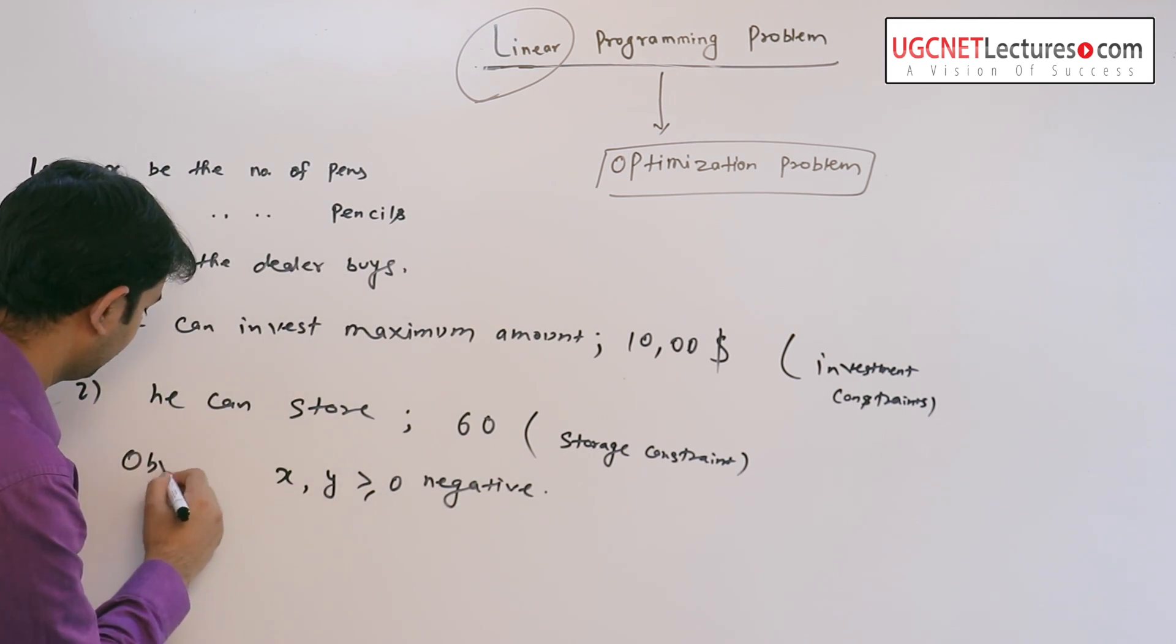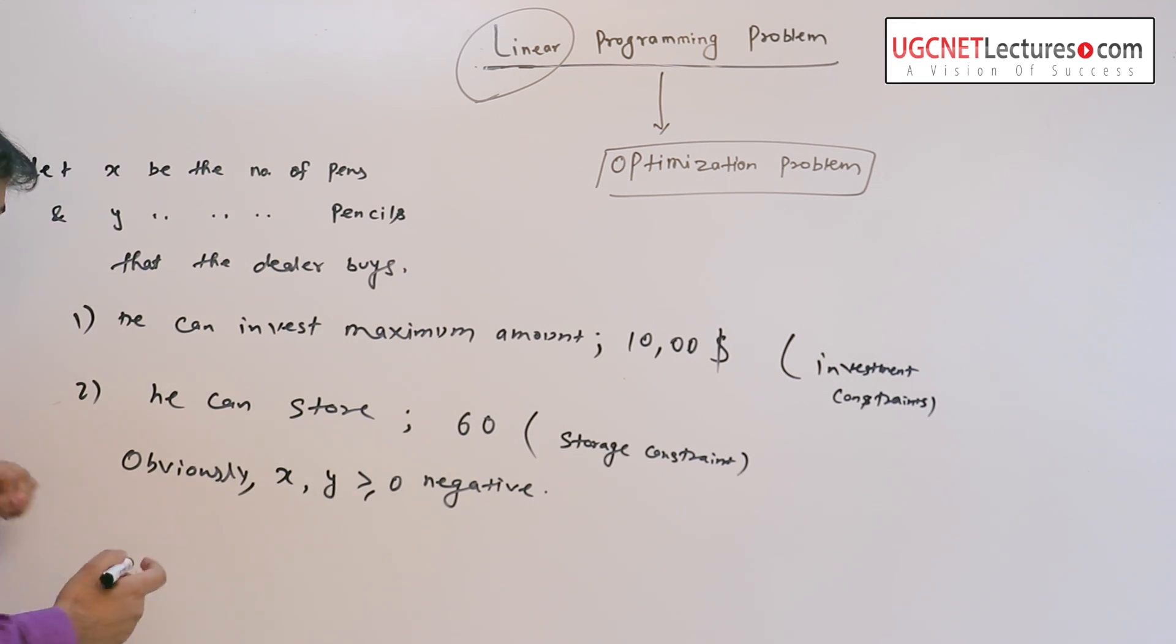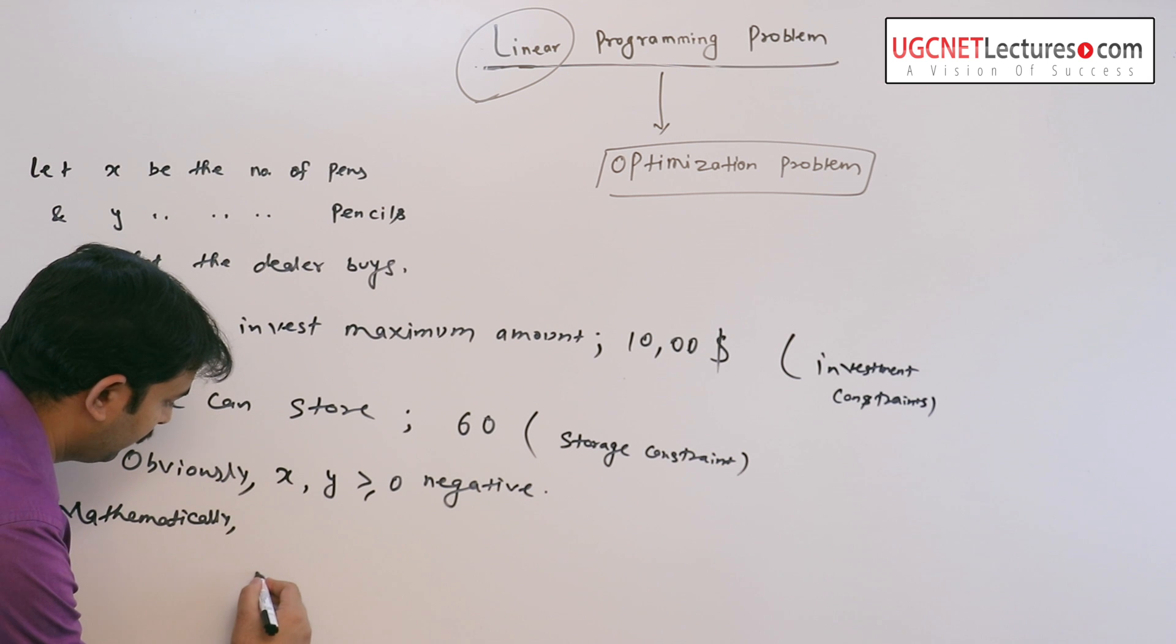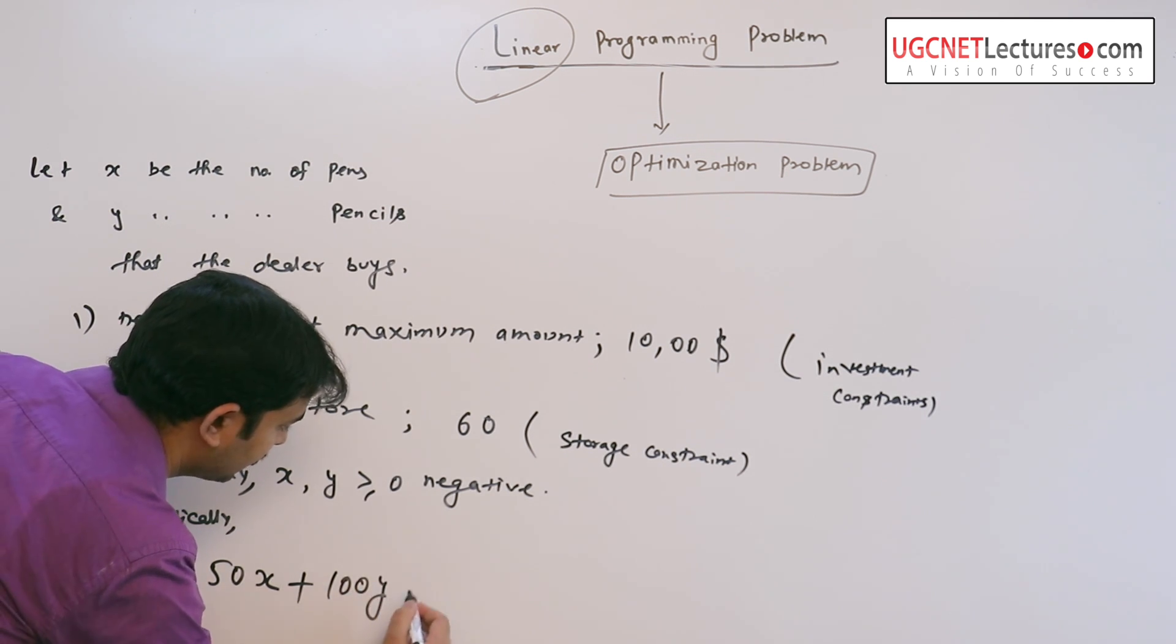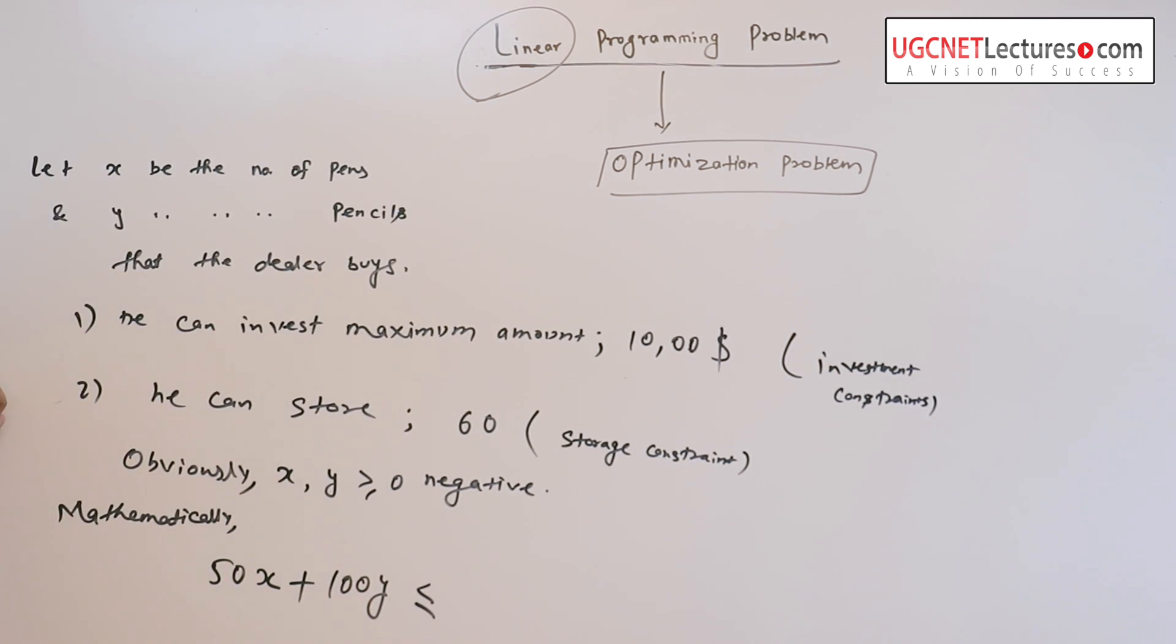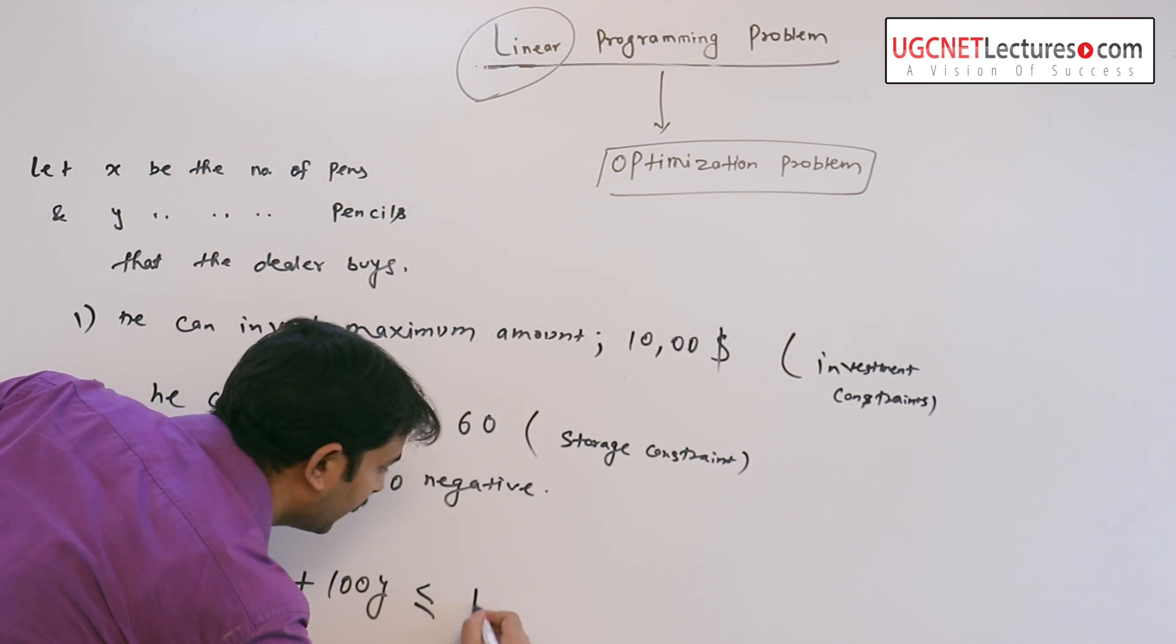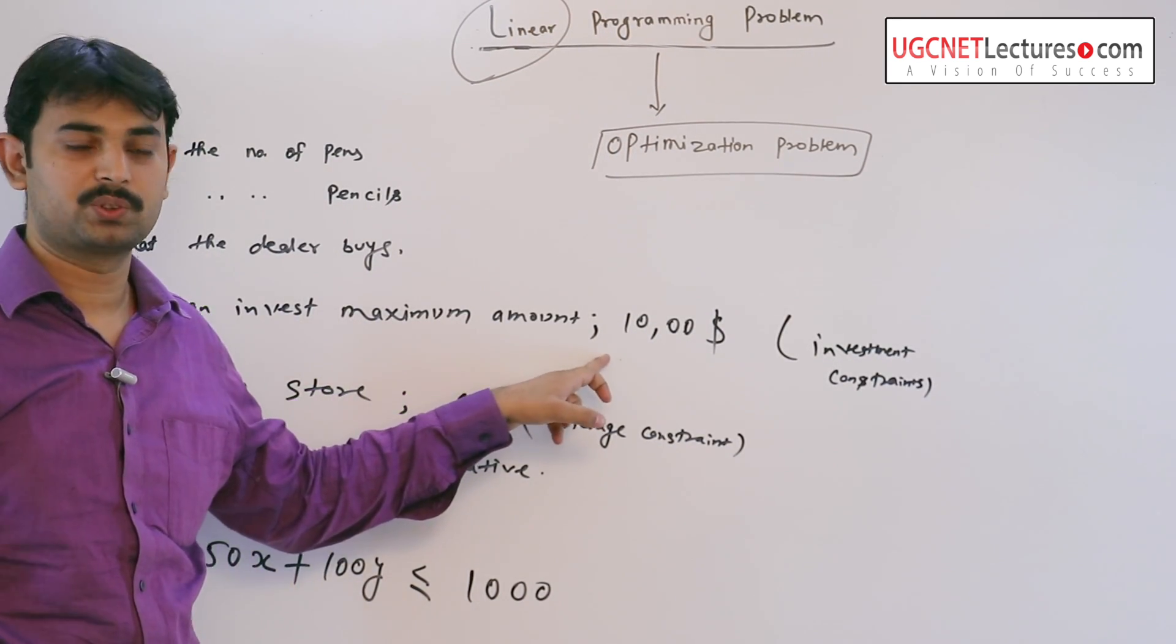It is obviously mathematically it can be stated as the dealer wants to buy 50x pens and 100y pencils so that he can invest maximum amount. So here it is 1000 as he can invest maximum 1000.